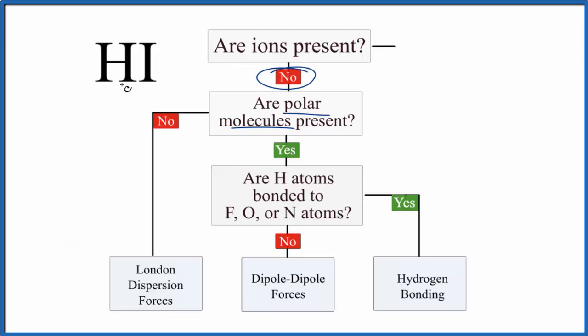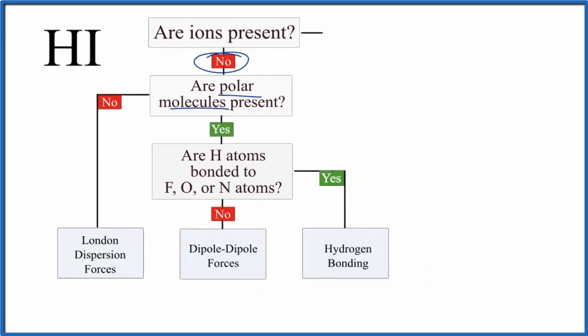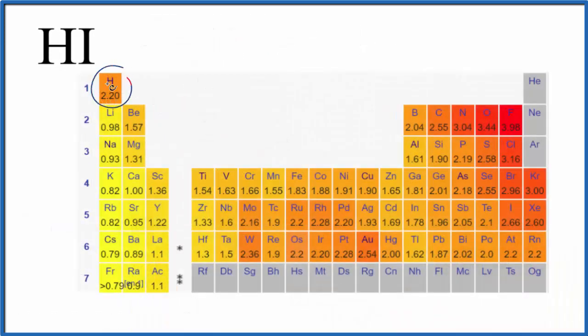If we look at the electronegativity difference between hydrogen and iodine, here's hydrogen 2.20, iodine 2.66. So there is a difference. It's not a huge difference, but we would have a dipole. So yes, we do have a polar molecule.